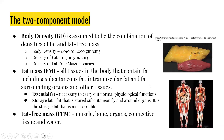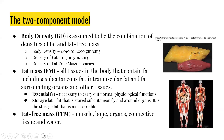In regard to body density, it is assumed to be the combination of densities of fat and fat-free mass. Body density generally ranges between 1.01 to 1.09, the density of fat is around 0.9, and the density of fat-free mass is going to vary significantly. Fat-free mass includes muscle, bone, organs, connective tissue, and water — and your total body water is going to vary a lot within the day, day-to-day, and between weeks. So the density of fat-free mass is going to vary significantly.